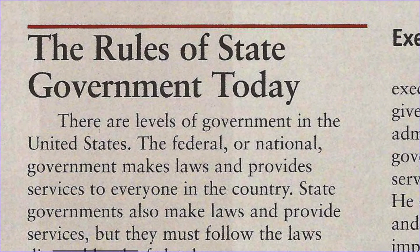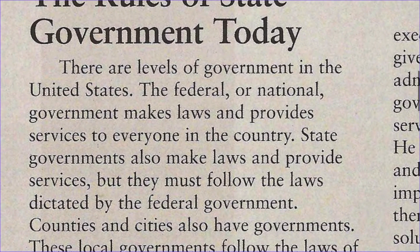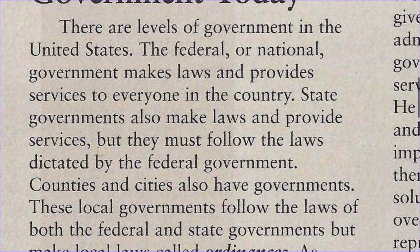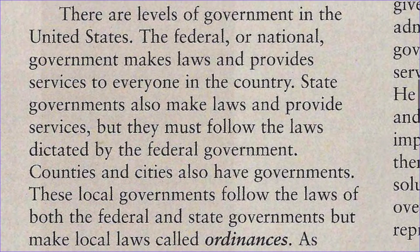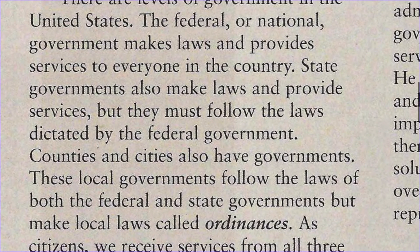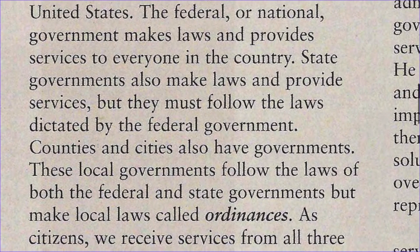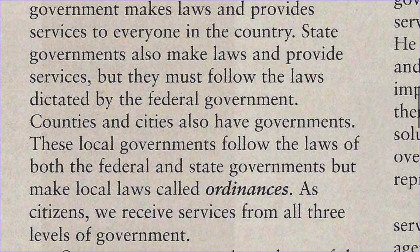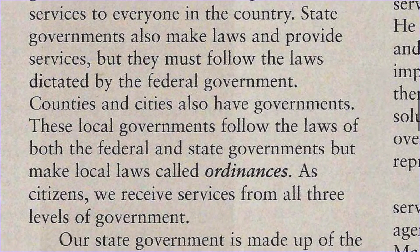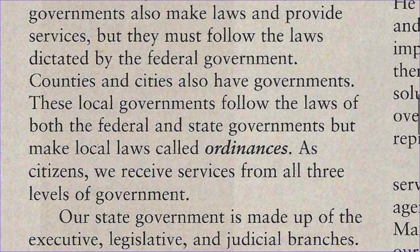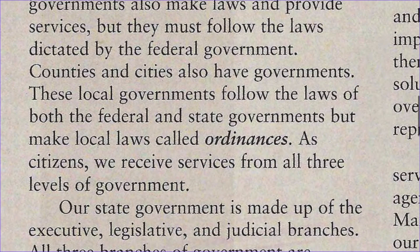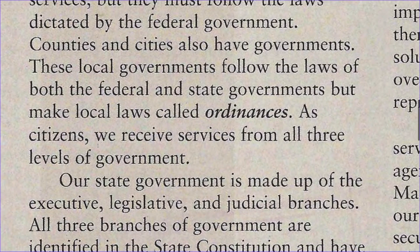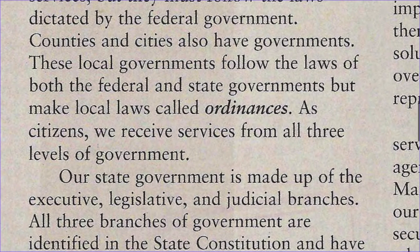The rules of the state government today. There are levels of government in the United States. The federal or national government makes laws and provides services to everyone in the country. State governments also make laws and provide services, but they must follow the laws dictated by the federal government. Counties and cities also have governments. These local governments follow the laws of both the federal and the state governments, but make local laws called ordinances. As citizens, we receive services from all three levels of government.